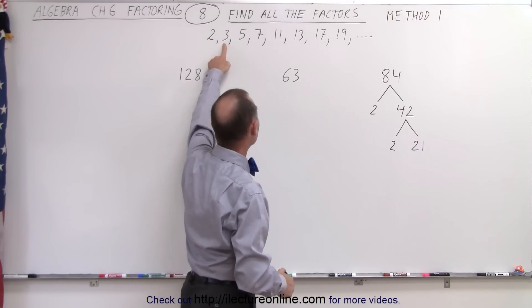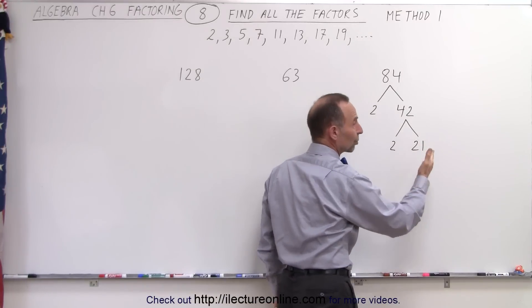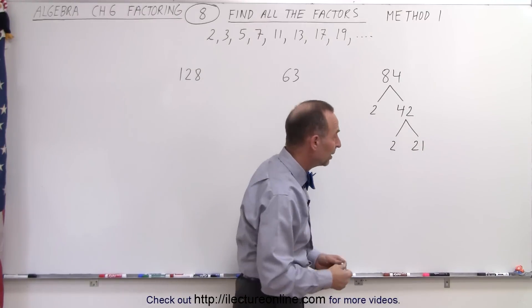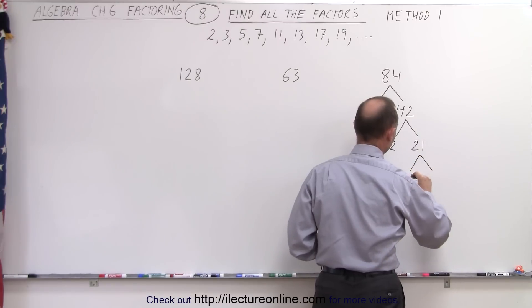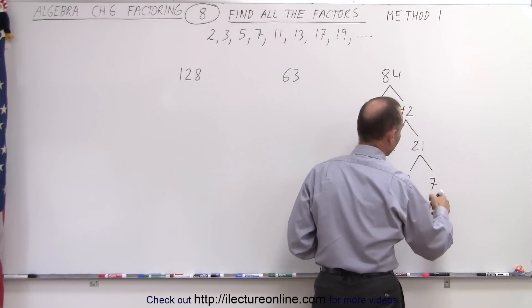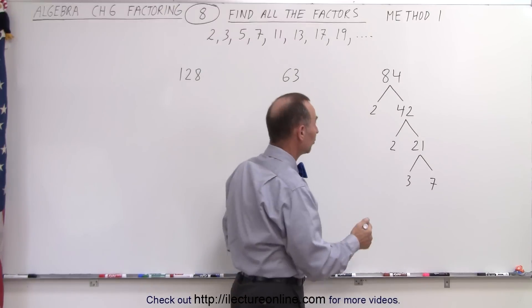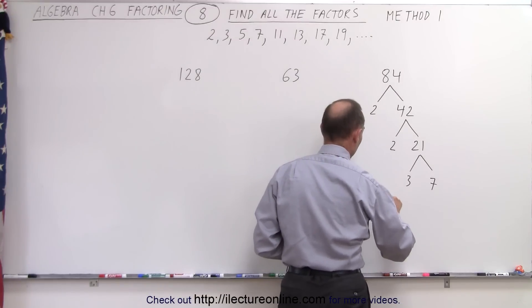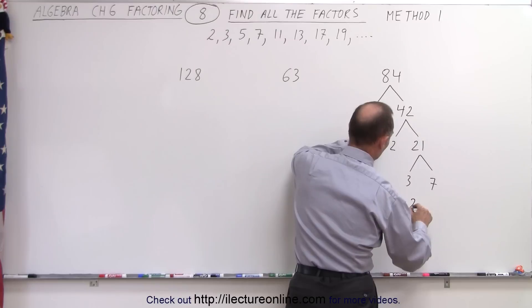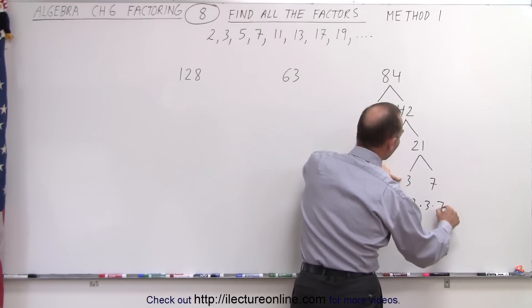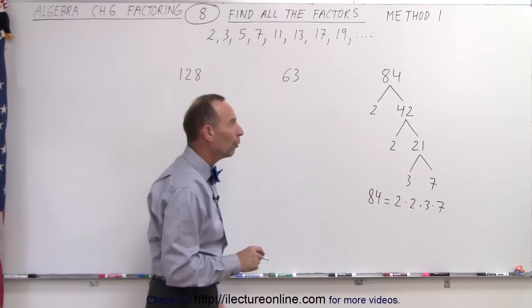So maybe it can be divisible by 3 — we take the next prime number. Notice when we add the digits together, 2 plus 1 is 3, which means yes, it's divisible by 3. And 21 divided by 3 is equal to 7. Now since 7 is a prime number, we're done. We can't go any further, which means that 84 can be written as 2 times 2 times 3 times 7. So these are the four factors of the number 84.